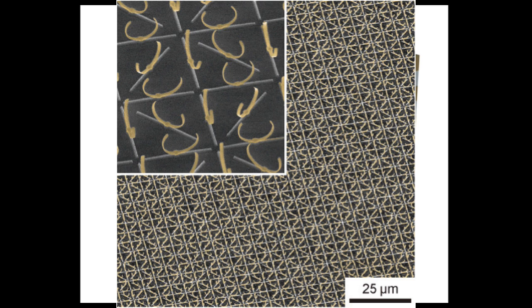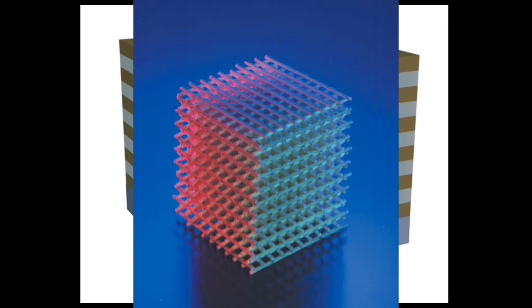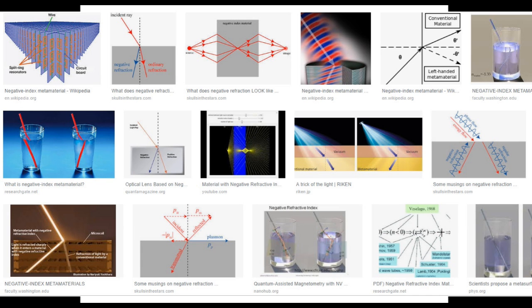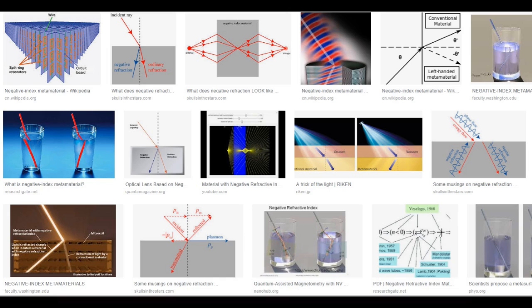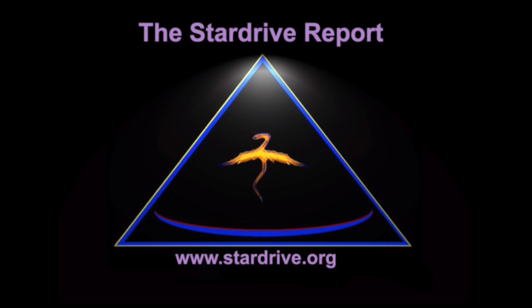The point is that these metamaterials have strange electromagnetic properties. They have what are called negative indices of refraction. And technically, what this means is that you can take an electromagnetic field and when it goes into the metamaterial, it can develop a negative energy density in effect and that would cause antigravity.